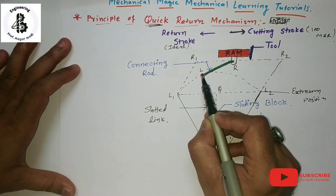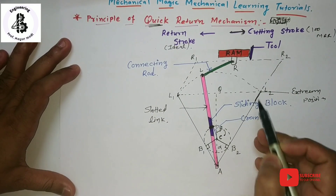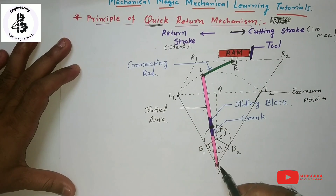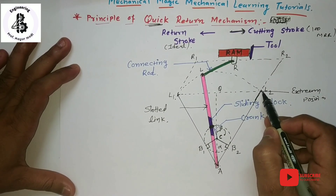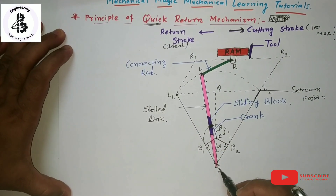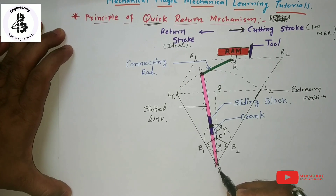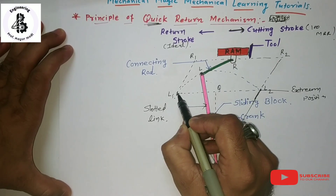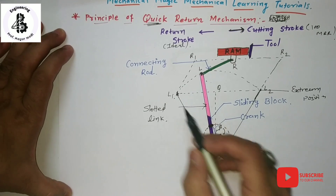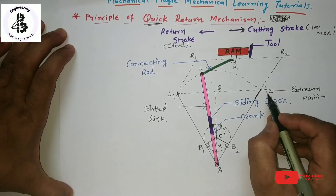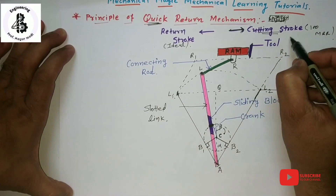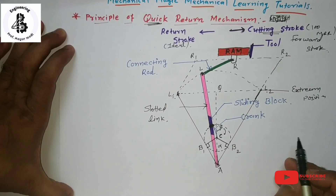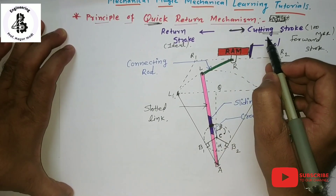AL1 is the extreme position on one side and AL2 is the extreme position on the other side. When the link is at position AL1, the RAM is at its extreme backward position — that is the end of the return stroke. From A to L2 that will be the extreme position in the cutting stroke, also called the forward stroke.